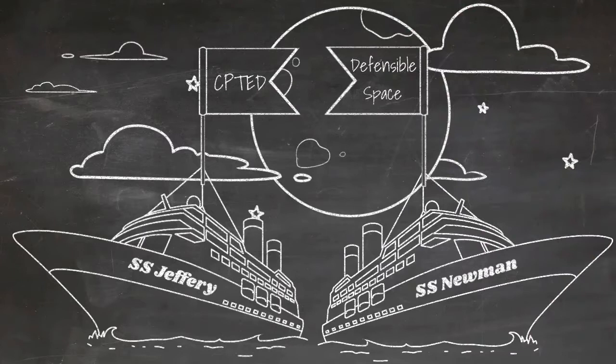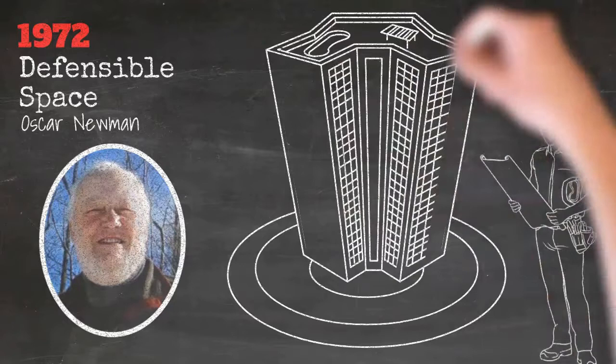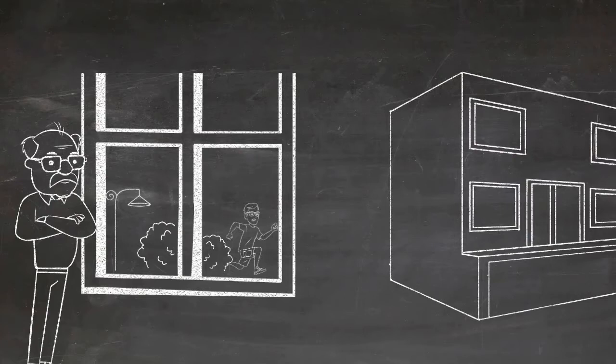Newman, an architect whose work focused on public housing, established three principles which he claimed bolstered tenants' sense of stewardship and lessened their fear of crime. They were territoriality, natural surveillance, and image and milieu.